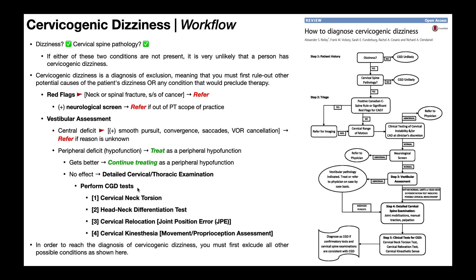You can further rule up cervicogenic dizziness by performing special tests, especially the cervical neck torsion test and the head-neck differentiation test. The reason we don't perform these tests at the start is that they can be positive for other conditions, so the specificity would be poor. But at this point we've already ruled out the other conditions, which has effectively increased the specificity of these tests. So if they're positive now, it's more than likely that we have cervicogenic dizziness.